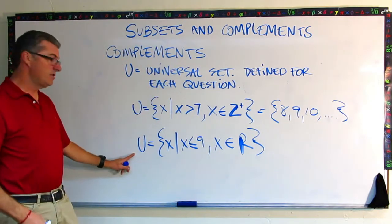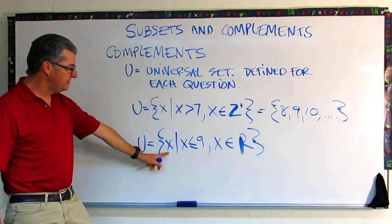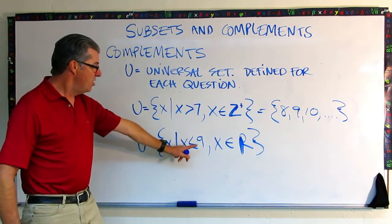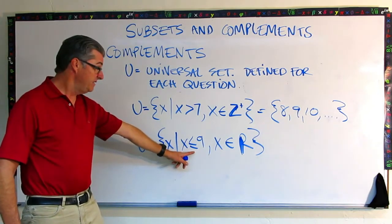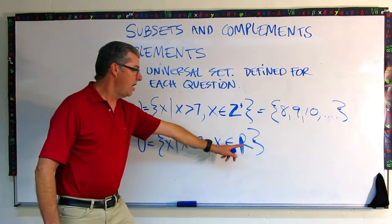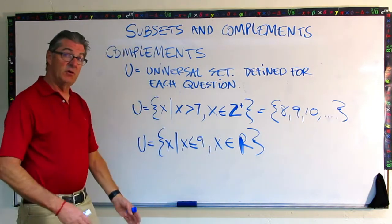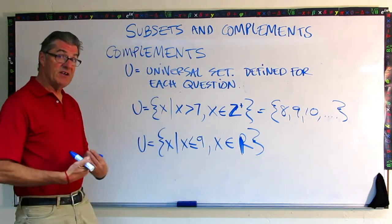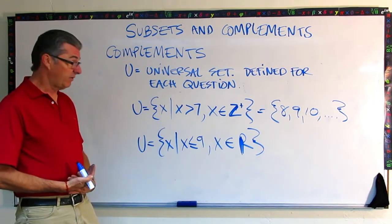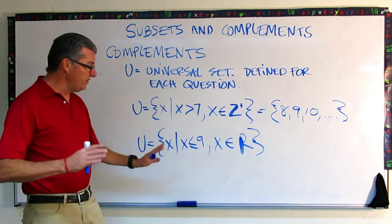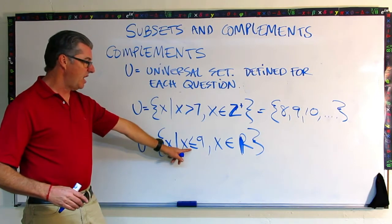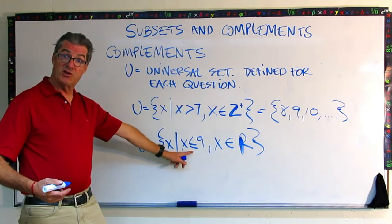Here's another way to define the universal set: the set of all x such that x is less than or equal to 9 and x is an element of the real numbers. Remember, real numbers are every number that can be shown on a number line. So all the real numbers that are less than or equal to 9. So this one would be better shown with a number line.